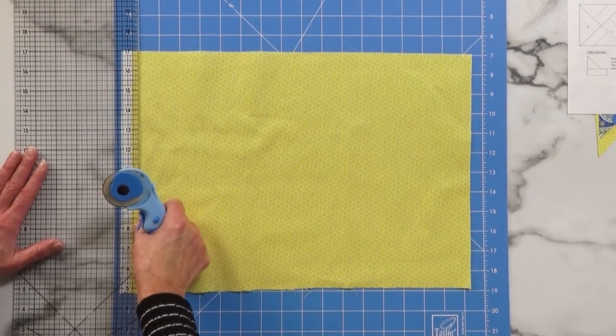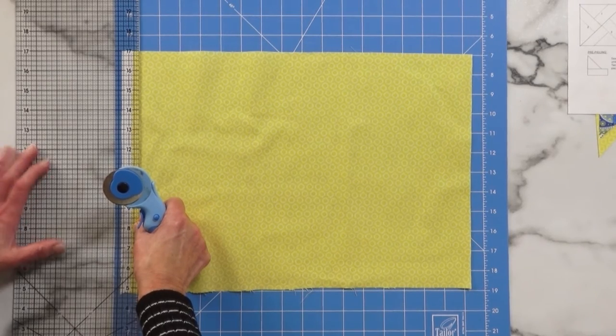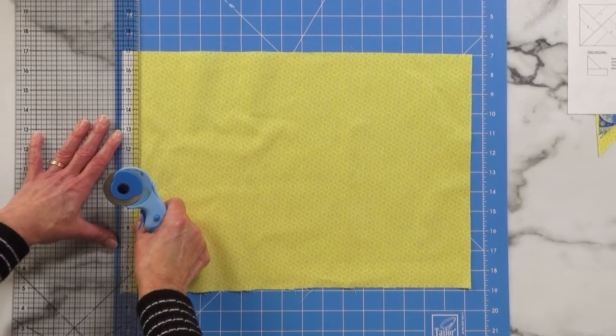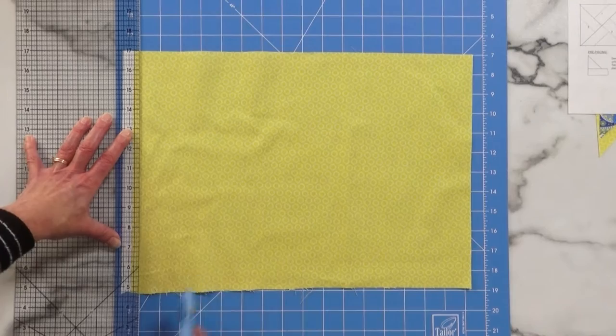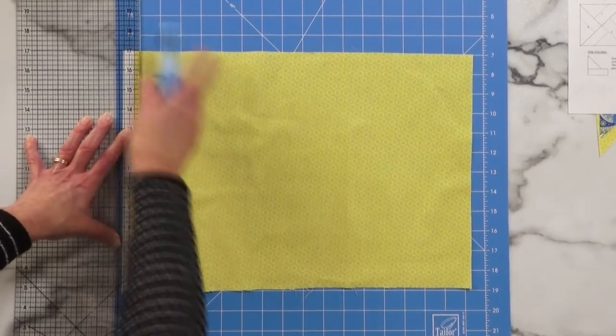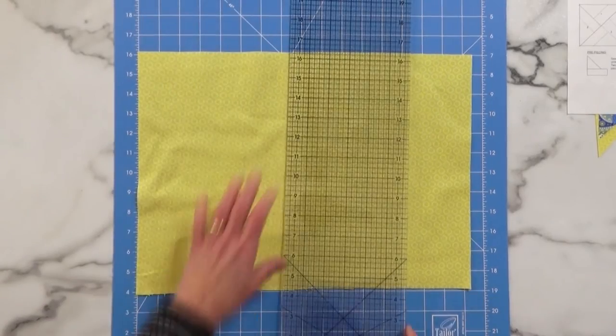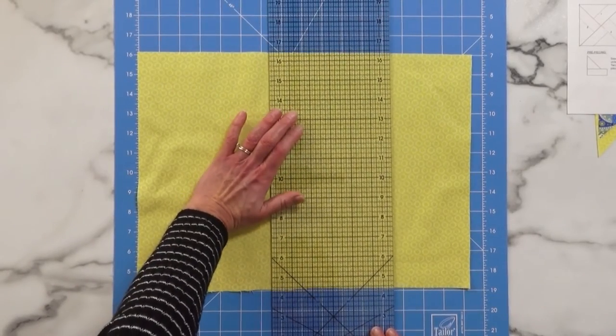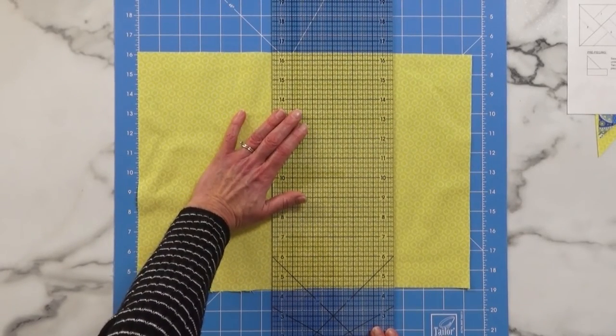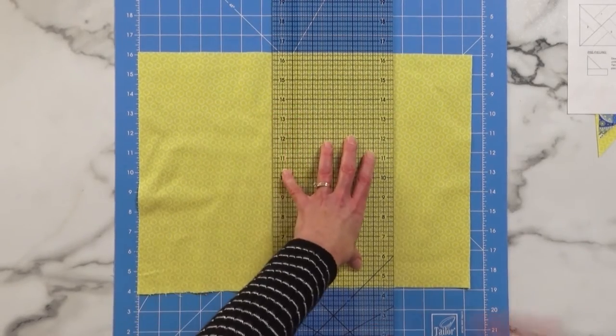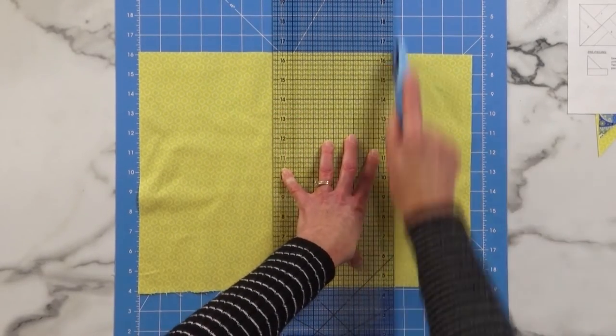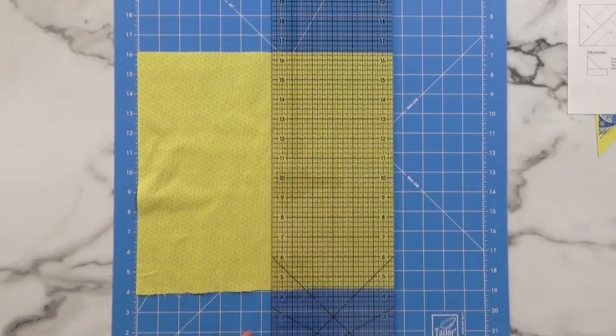So we're going to place our fabric on the cutting mat. We'll start by cutting in the zero line like that. And we need twelve and a half inches so we'll line our mat and ruler up together to measure twelve and a half inches in this direction. Slide that away.